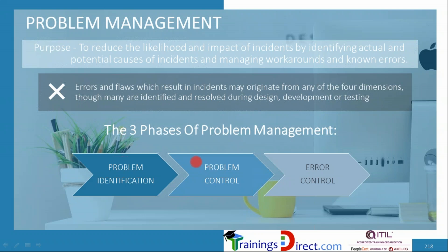Problem control focuses on root cause analysis — identifying the cause of the problem. This is further developed in error control, where the workaround may become the final resolution if no other fix is available, or a resolution may be developed based on the workaround. In error control, the analysis may be improved, the workaround finalized or improved, resulting in a resolution. These are the three stages of problem management.